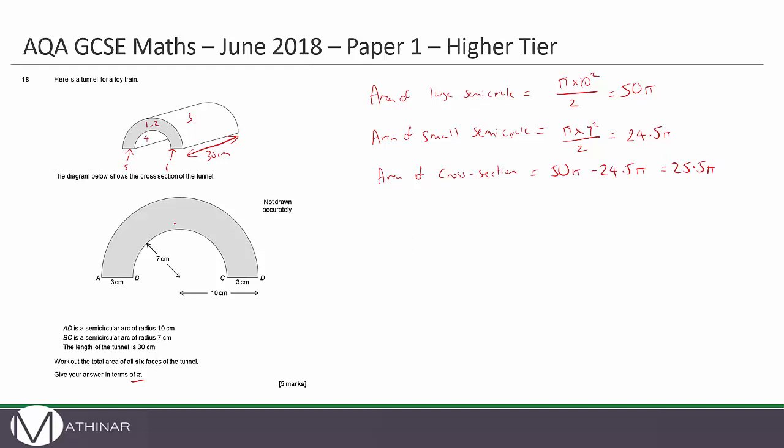Now there are two faces which are identical to this. So area of both cross sections equals 25.5π times 2, which is 51π. That's these two faces - the one here and the one in the back. So we've got 51π to start off with.